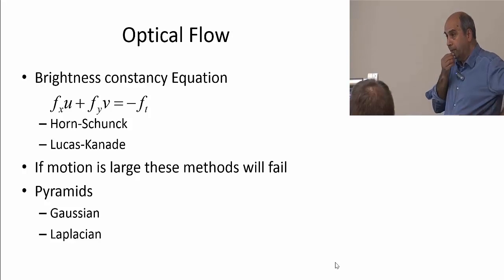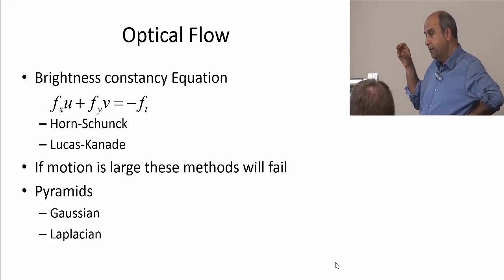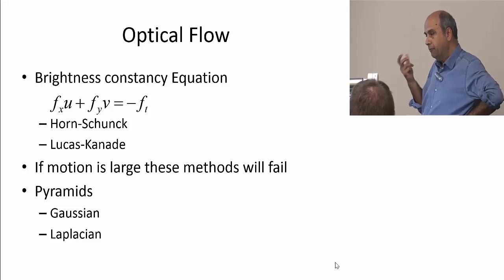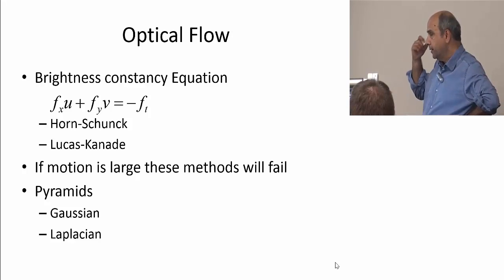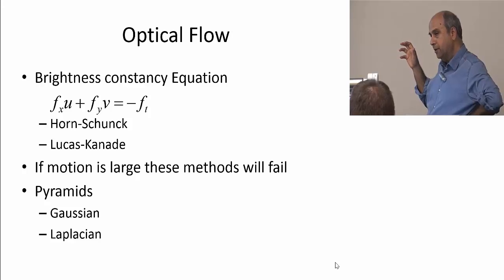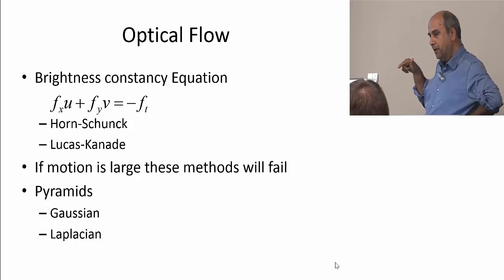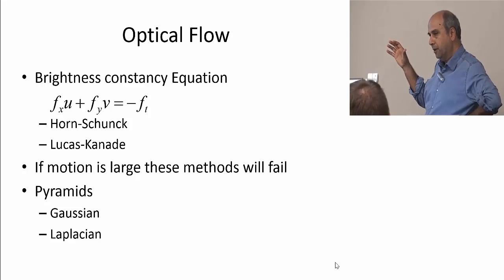Then we talked about the Lucas-Kanade method, which looks at a small neighborhood, gets multiple equations for two unknowns u and v, assuming the optical flow in a 3x3 or 5x5 neighborhood is constant, then uses least squares to compute u and v. If the motion is large, we won't be able to compute the correct optical flow because all these methods depend on local spatial-temporal derivatives looking at a small neighborhood. They can't distinguish between small and large motion — that's the aperture problem.